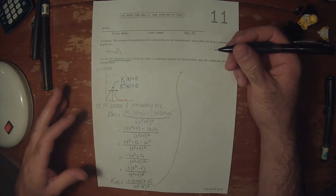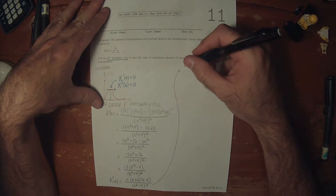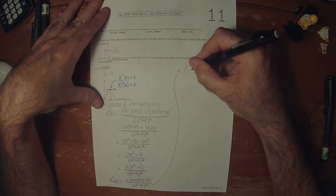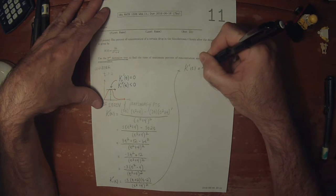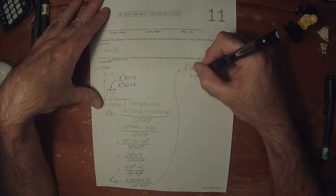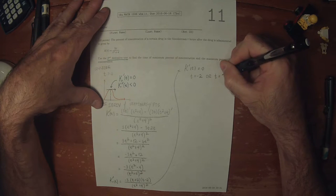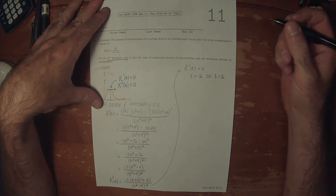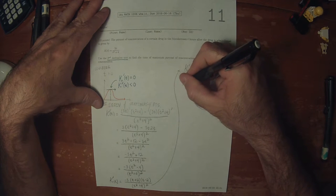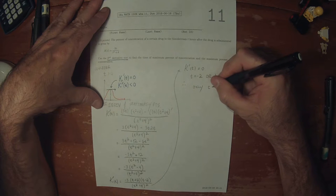It's clear that the stationary points of the derivative are when t equals negative 2 or t equals 2. However, since t is taken to be positive, the only stationary point is t equals 2.